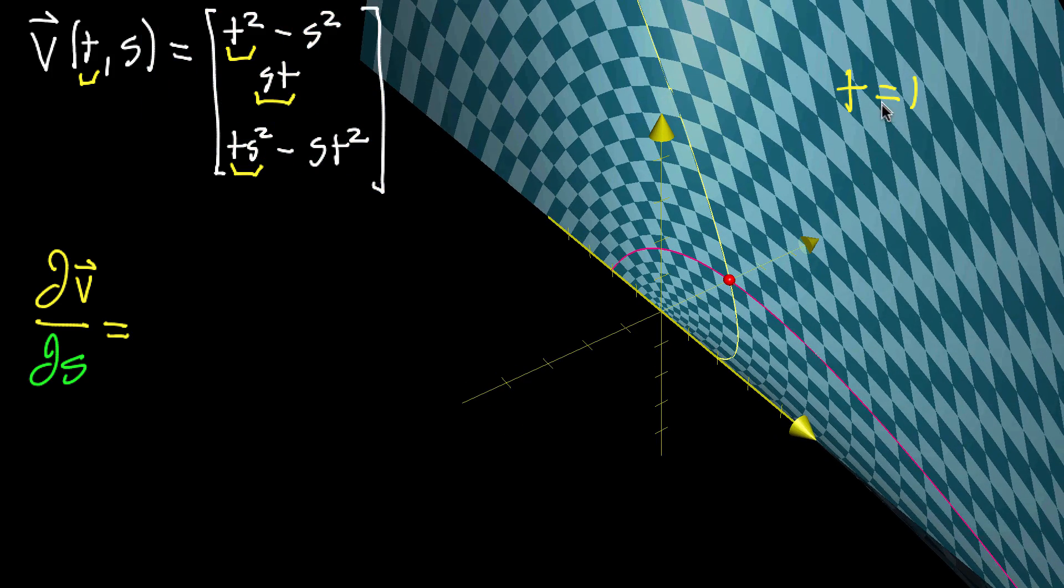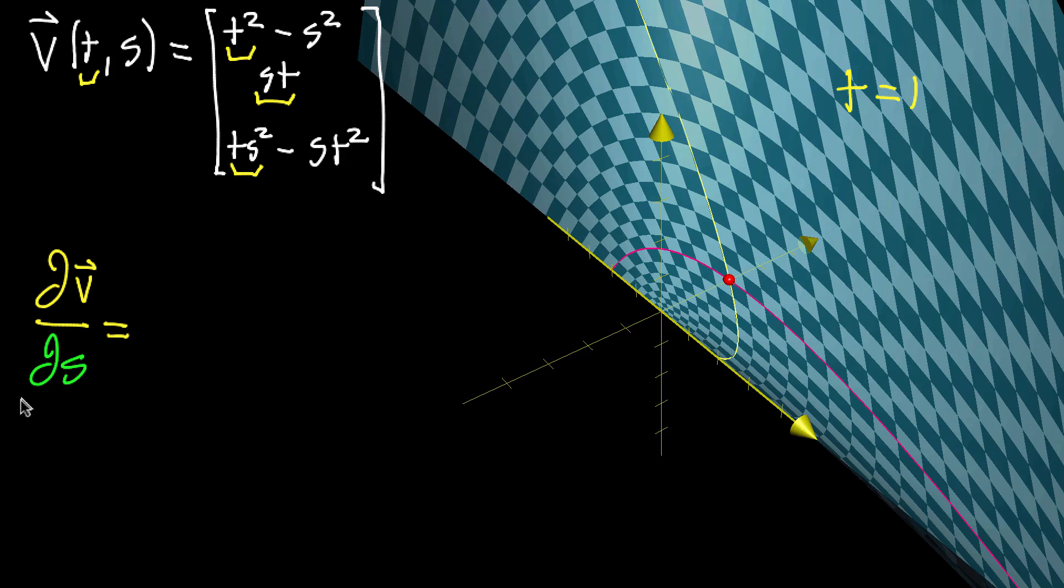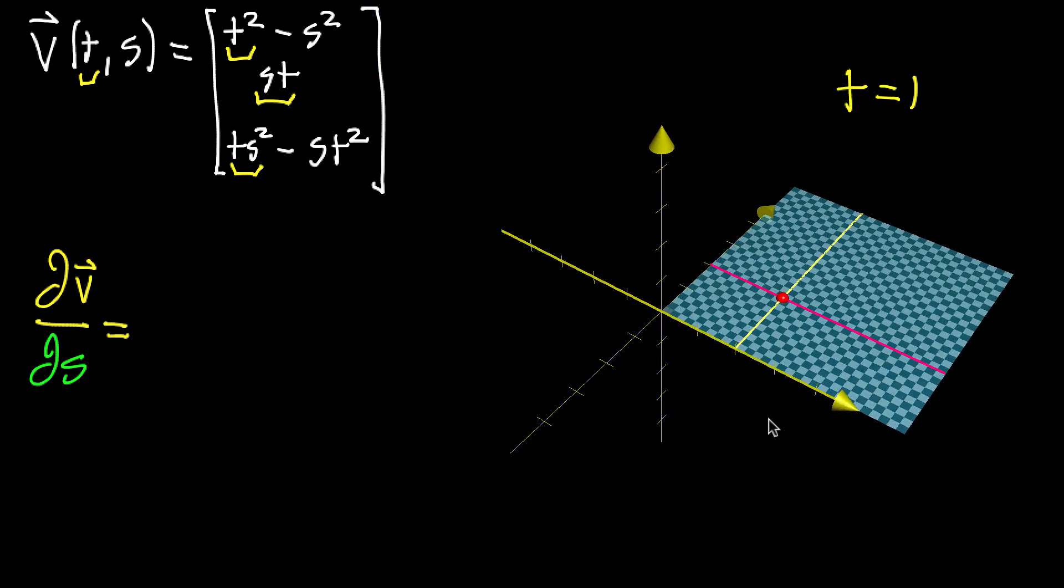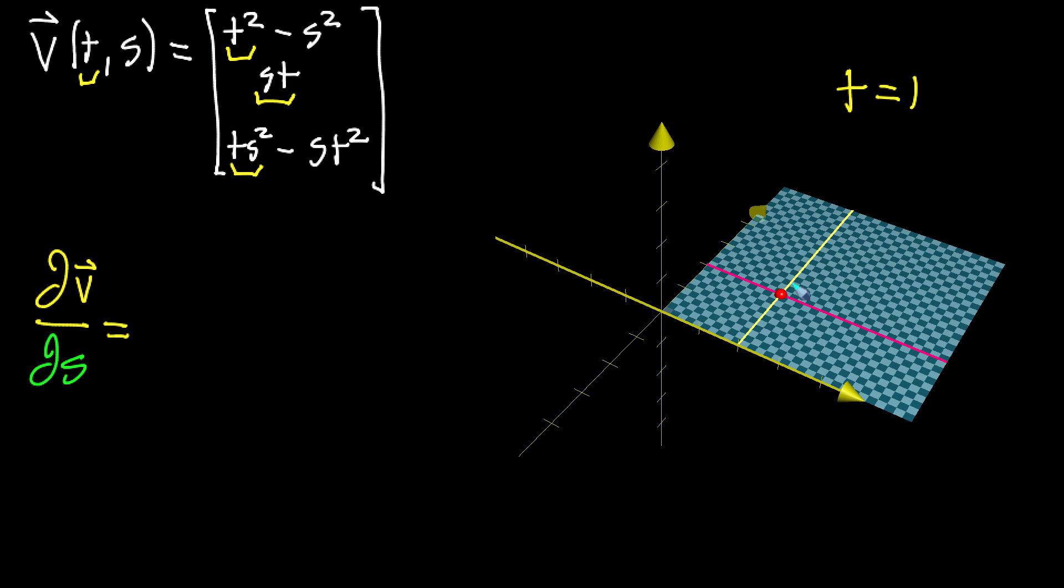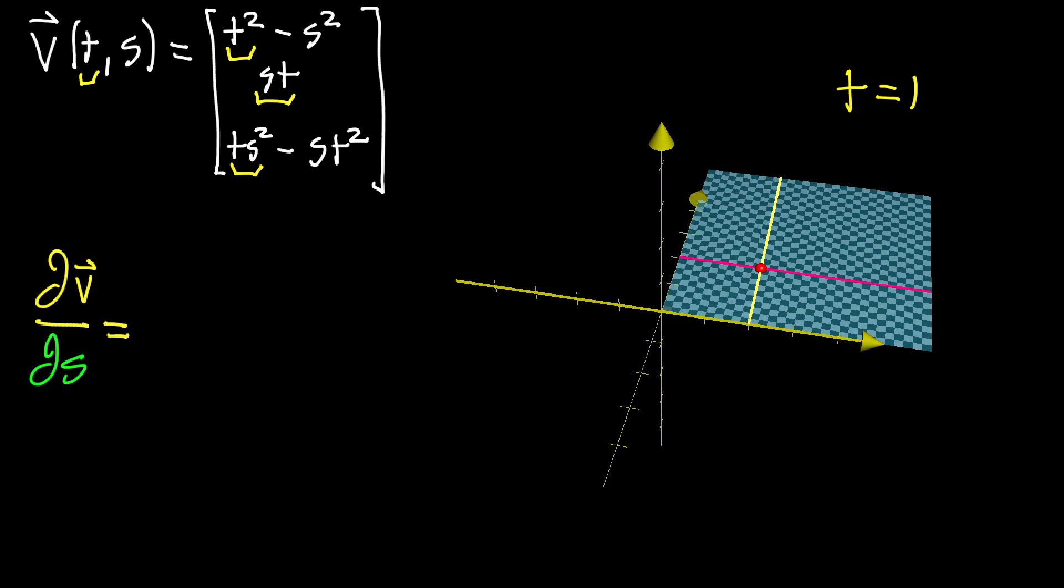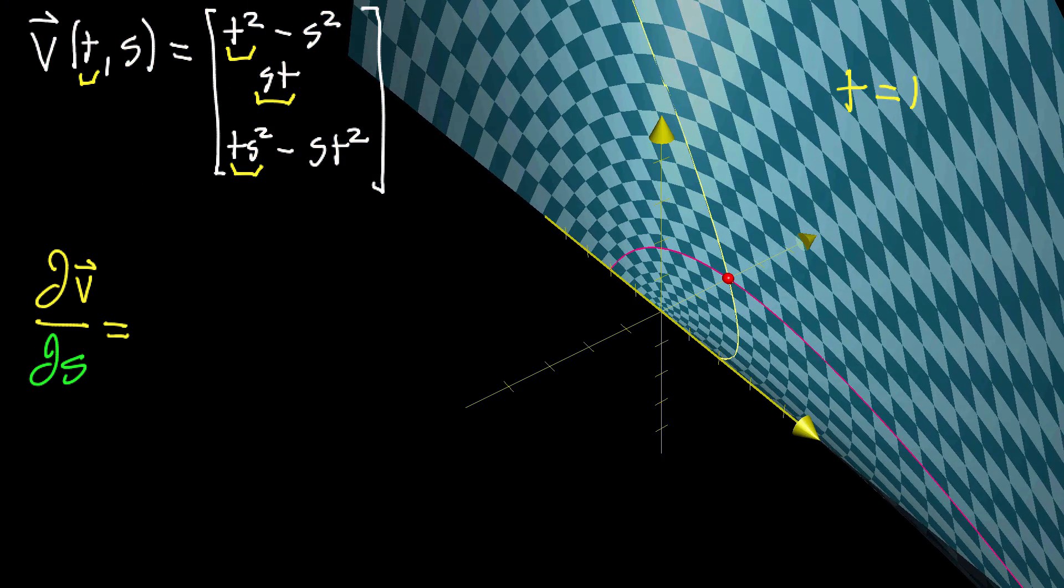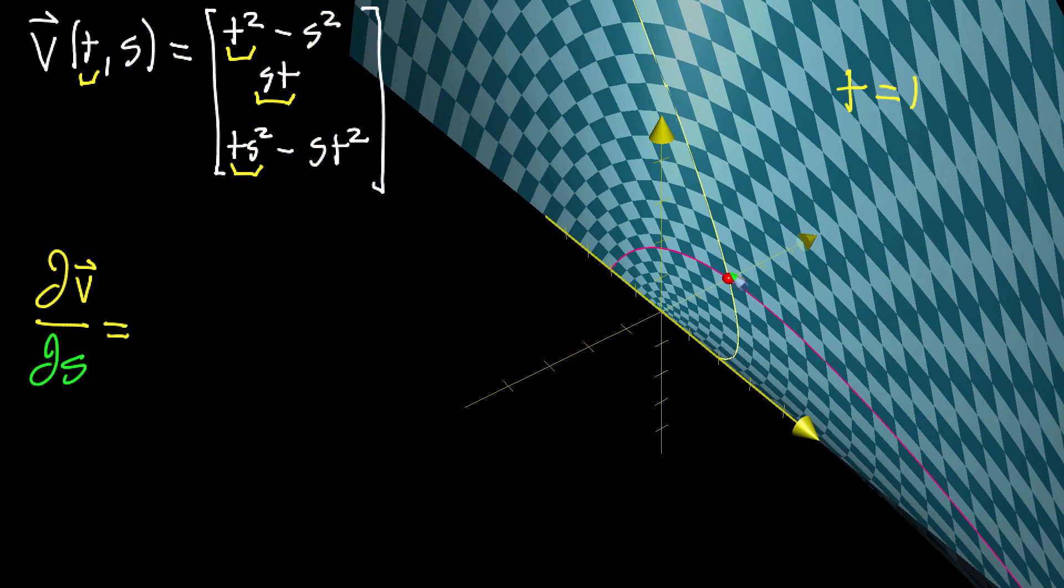For partial derivatives, we think very similarly. You think of that partial S as representing a tiny movement in the S direction, just a little nudge. Then you look for the corresponding nudge in the output space. If we nudge the input that much and go over to the output, maybe that tiny nudge corresponds with one that's like three times bigger - it looked like it stretched things out.